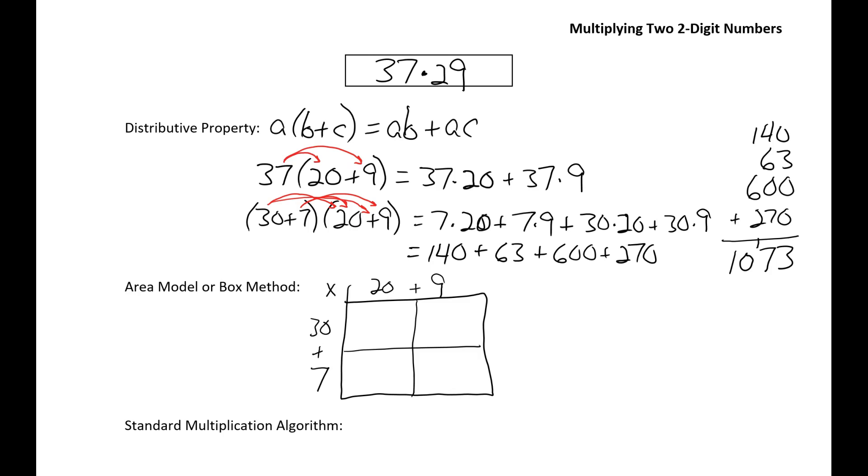So 30 times 20 is 600. And the 600 goes in this part of the box. 30 times 9 is 270. 7 times 20 is 140. And 7 times 9 is 63. And you can see these are the same four numbers that we got when we did this multiplication using the distributive property.